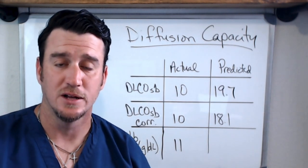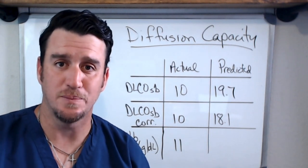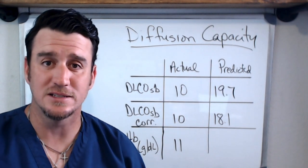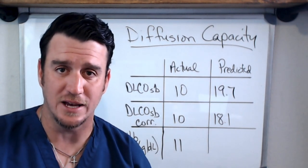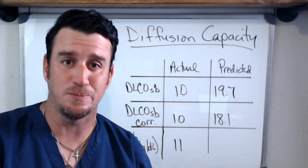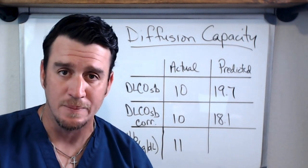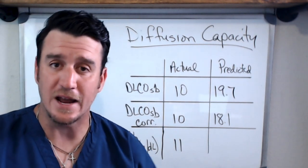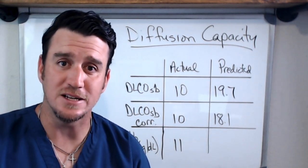Here we are in part three and we're talking about diffusion capacity. Now what you need to understand about diffusion capacity is that this is a single breath test where the patient is asked to inhale as deep as possible, hold their breath for 10 to 12 seconds, and then quickly exhale.